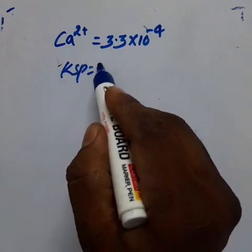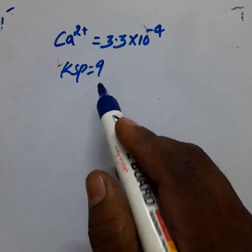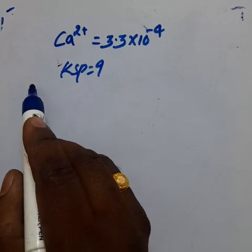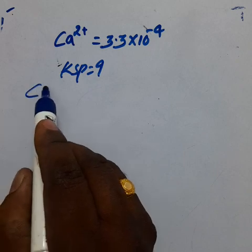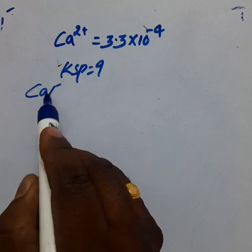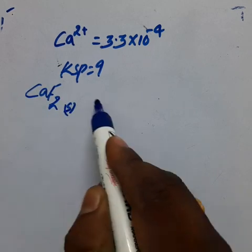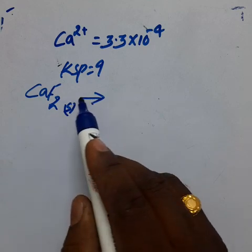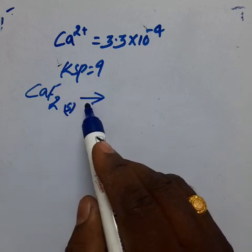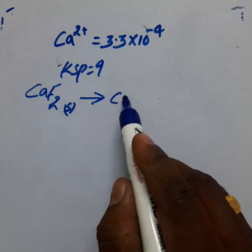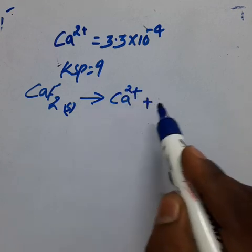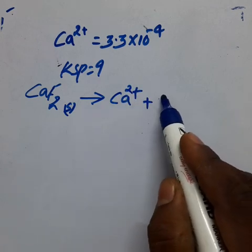We need one equation for finding Ksp. Calcium fluoride is in the solid state; its formula is CaF₂ (solid). It undergoes dissociation to form Ca²⁺ and 2F⁻.